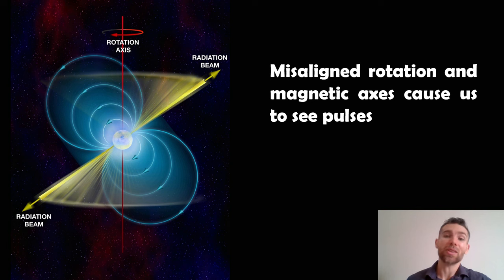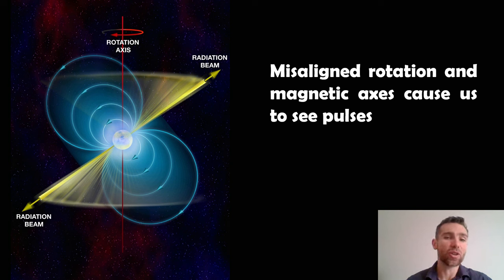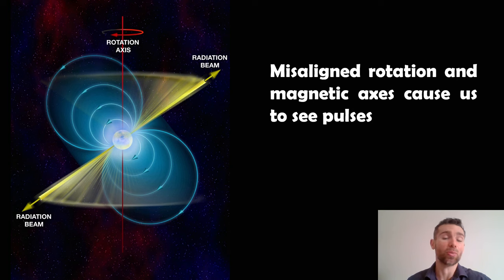The misaligned rotation axis and the magnetic axis is what leads to the pulses that we see. This is a visual representation of what I just explained. That magnetic axis is tilted over, and as the pulsar rotates, those beams sweep out like a lighthouse. From Earth, if that beam sweeps over us, we detect that as a very fast energetic pulse per rotation — that's why we can detect them, and why they're called pulsars.